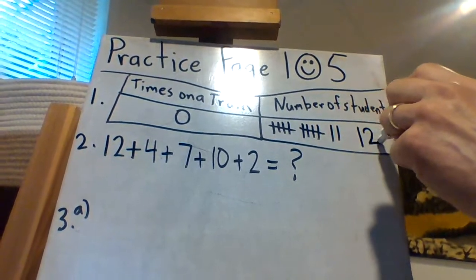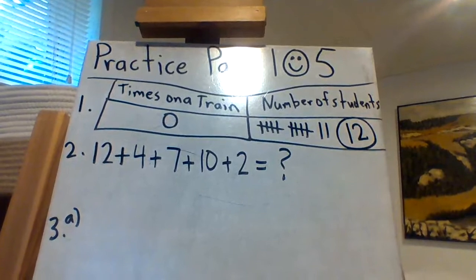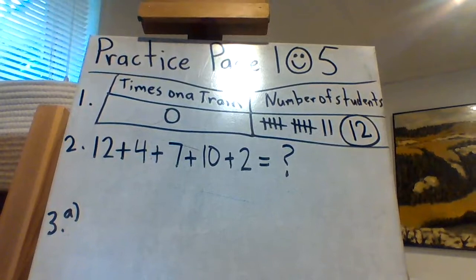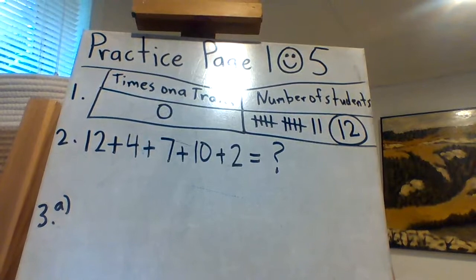The standard way of writing it, of course, is one ten and two ones, but the other way of representing it is two five tallies and two one tallies makes twelve. Twelve kids have never been on a train in that survey.